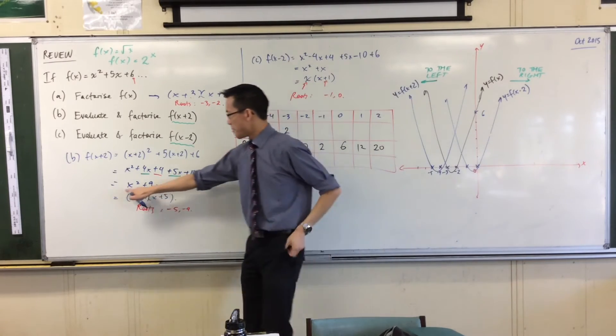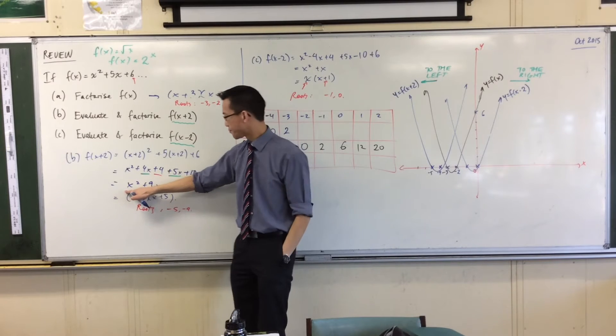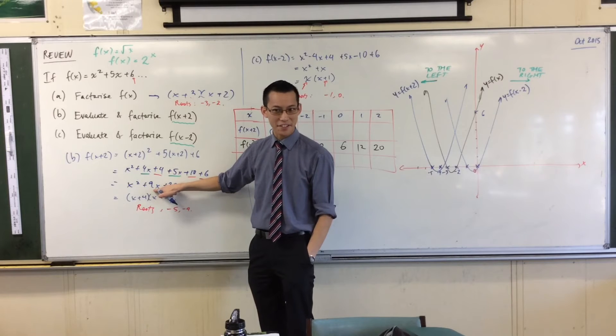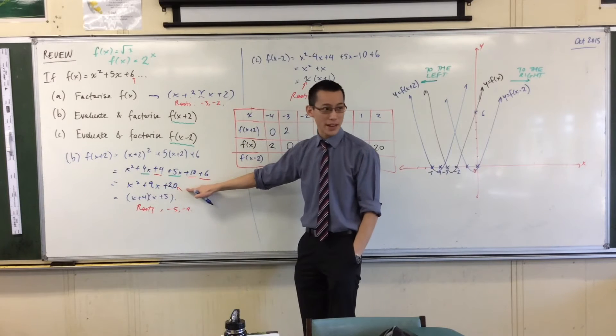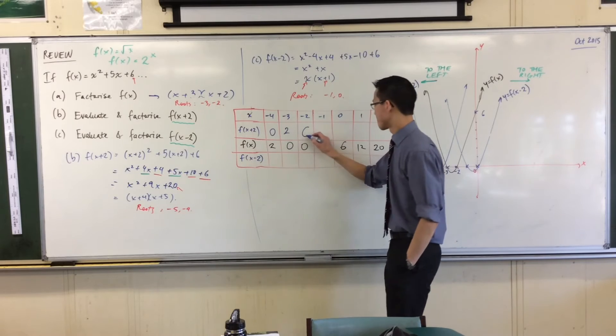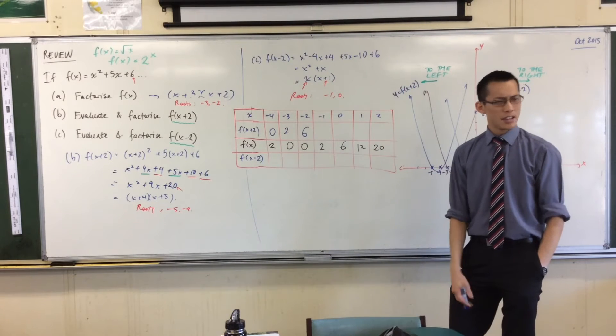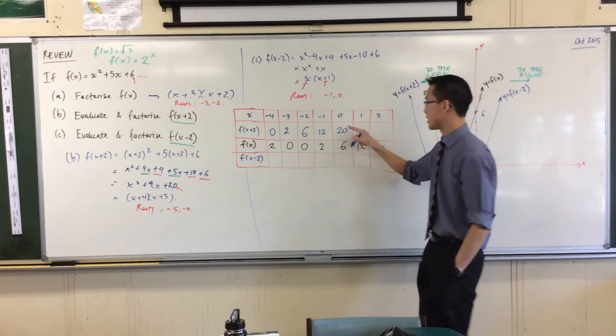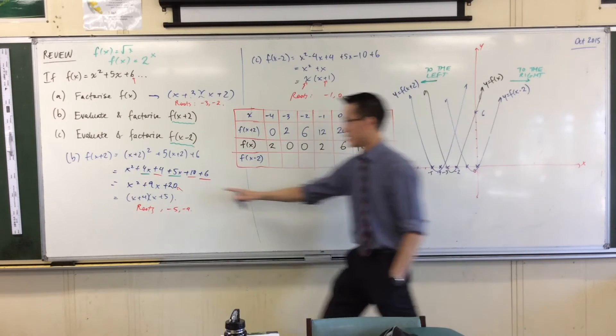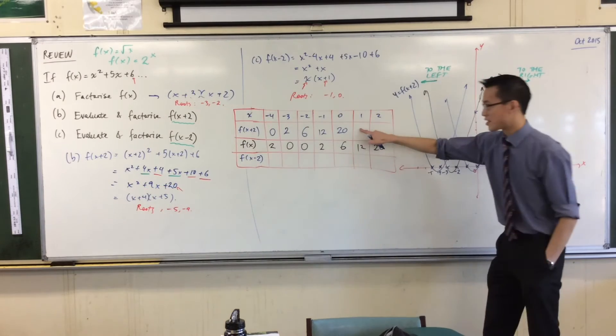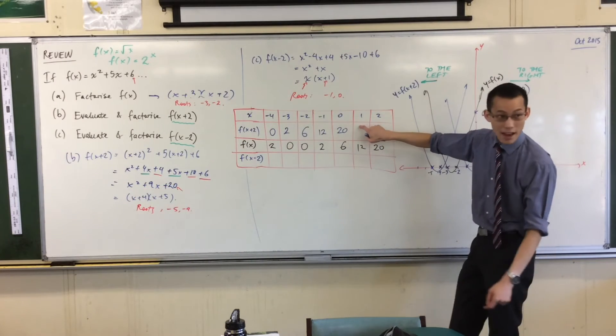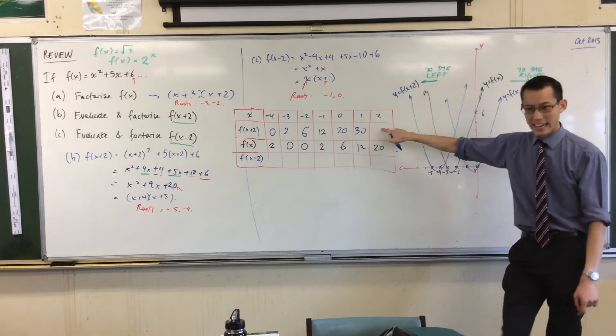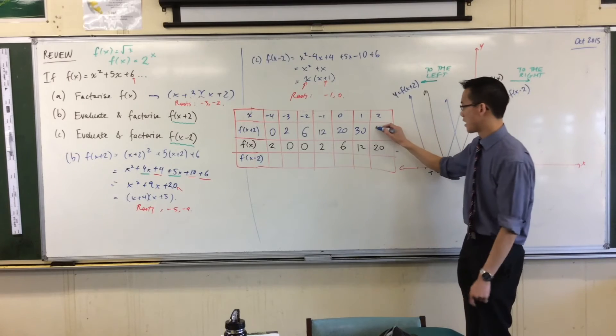One more time. Negative 2. That's going to become 4 minus 18. What's 4 take away 18? That's negative 14 plus 20, which is 6. That's going to be 12. That's going to be 20. That's an obvious one. Do you see why? Because 0, 0, 20. Let's just quickly do this one. This is going to be 1 plus 9 plus 20, which is 30. And then this one's going to be 4 plus 18, 22 plus 20. That'll be 42.